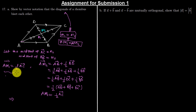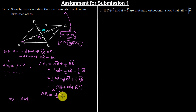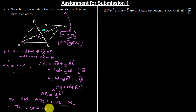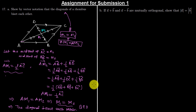Since AM1 = (1/2)·AC = AM2, we conclude that M1 = M2. Since the midpoints of both diagonals coincide, the diagonals bisect each other. That's quite easily done. Let's move on to the next question.